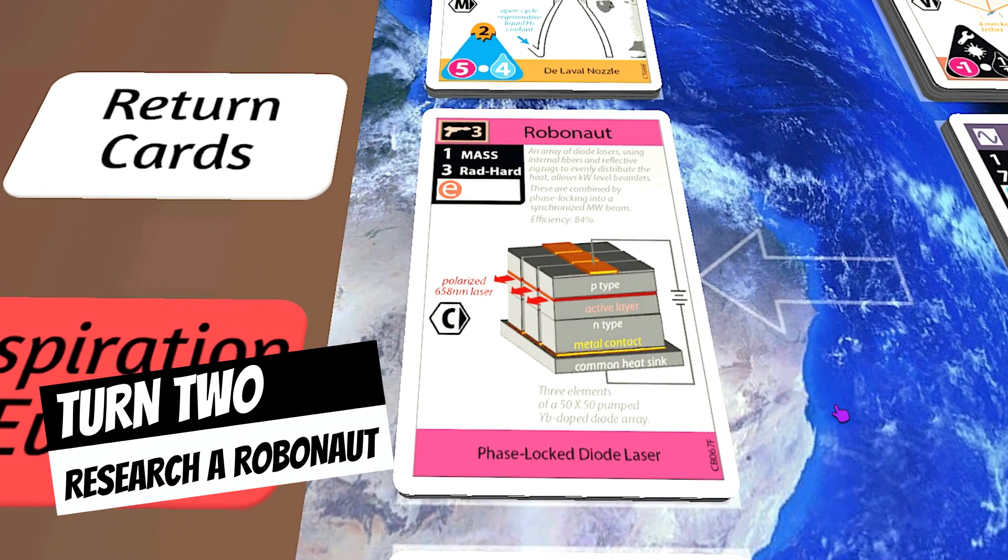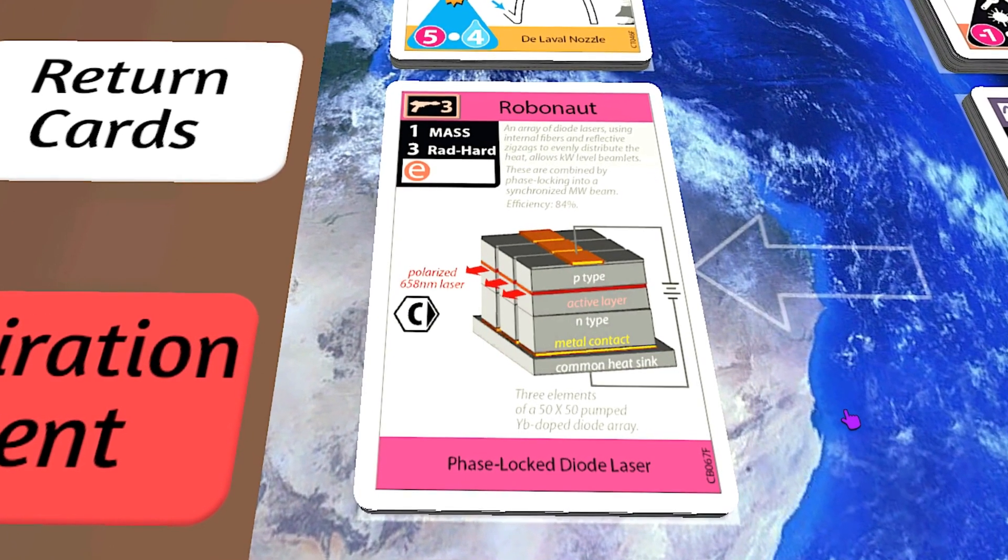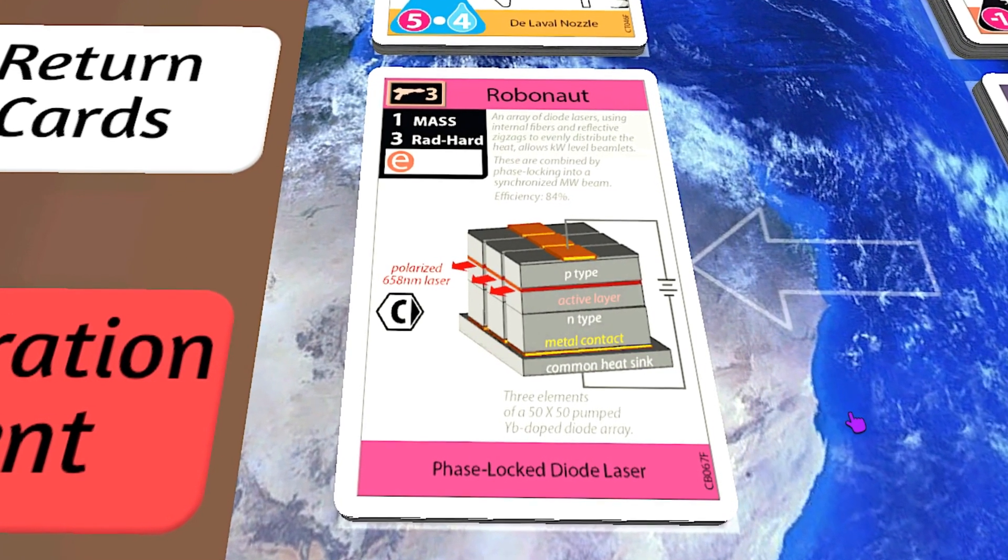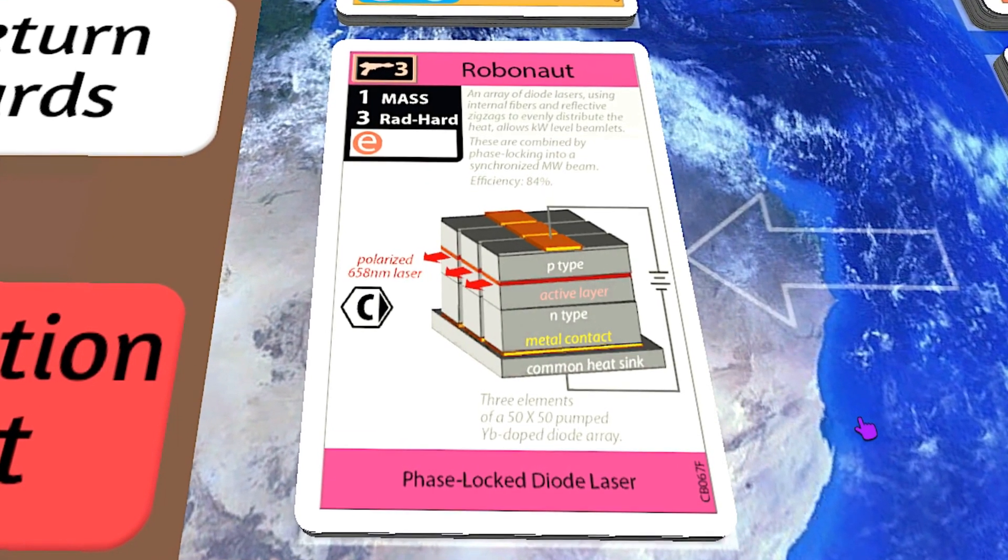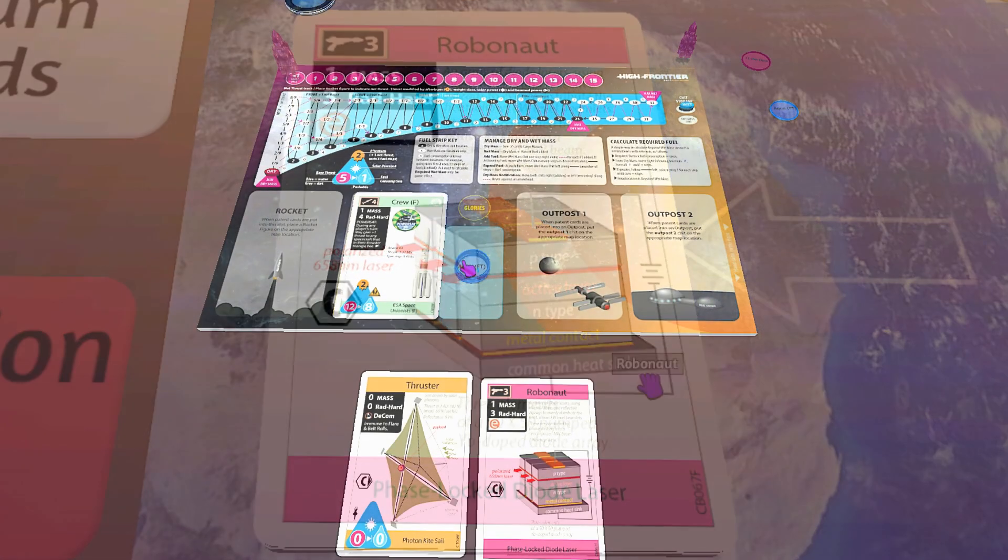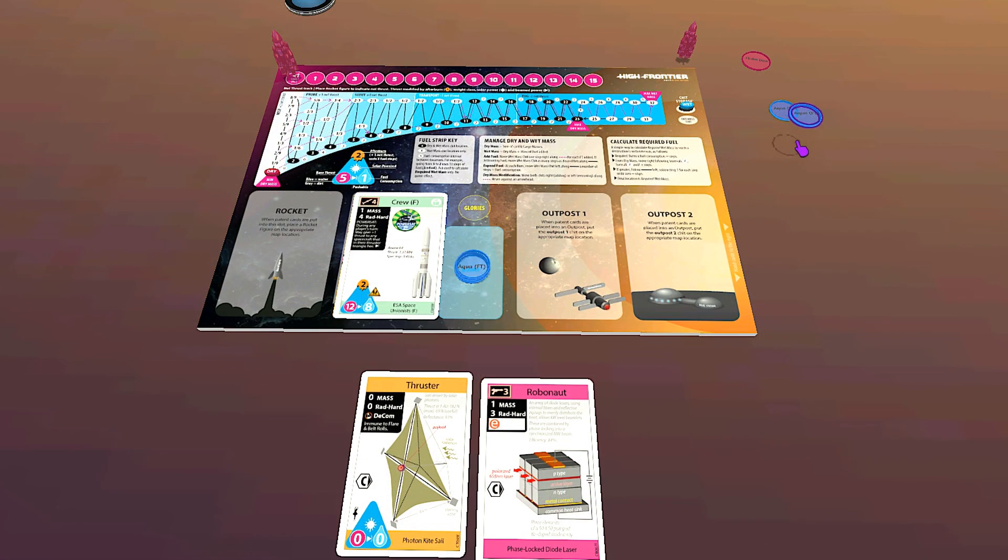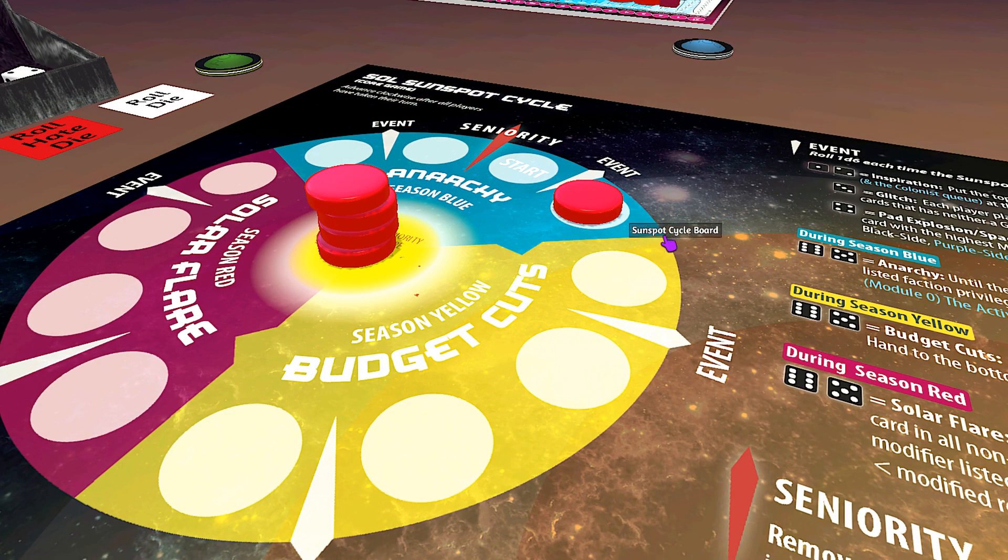My next move is to grab a robonaut. On top is the phase-locked diode laser, which is nice as it is light and it is a ray gun prospecting robonaut which I will get to a little bit later. It requires a generator but is otherwise pretty good. This costs me another aqua. The sunspot cycle enters the yellow season.